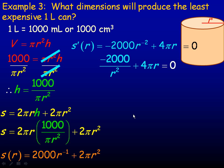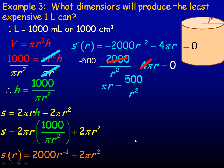Setting that equal to zero and rewriting r⁻² as 1/r², we get −2000/r² + 4πr = 0. Both coefficients divide evenly by four, giving −500/r² + πr = 0. Moving −500/r² to the other side (with sign change) gives πr = 500/r².